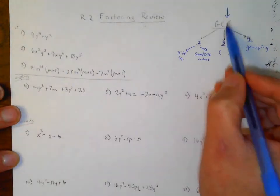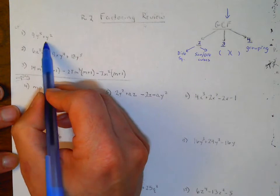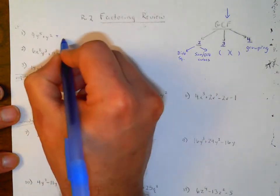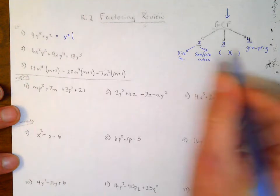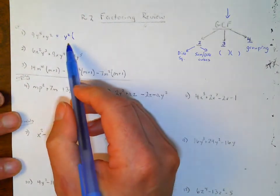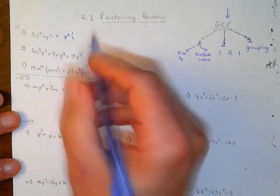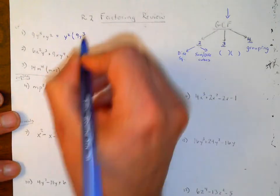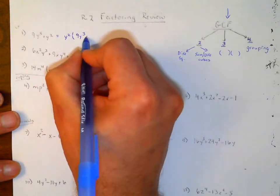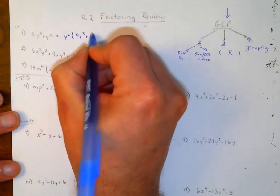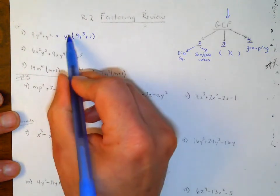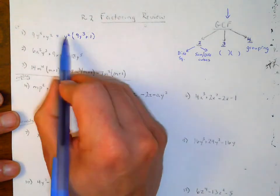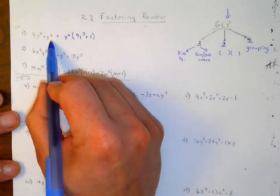Starting with greatest common factor: I can take out a y² from both terms. The greatest common factor is like the reverse of the distributive property. If I take a y² out, I'm left with 9y³ inside. Taking a y² out of the other term, I have just 1 left. Distributing through gives you 9y⁵ plus 1y².